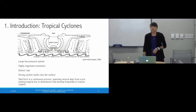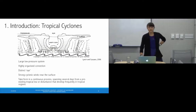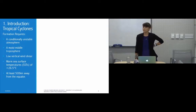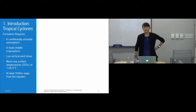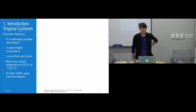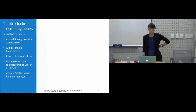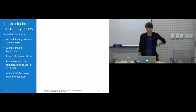Tropical cyclones form in a continuous process spanning several days, usually from a pre-existing low or disturbance. For a disturbance to become a full tropical cyclone, you need several environmental conditions: atmospheric instability, moisture in the middle troposphere, low vertical wind shear — which allows convective structures to remain intact — warm sea surface temperatures of 26.5°C extending to 60 meters depth, and a location at least 500 kilometers from the equator for the Coriolis effect to produce spin.